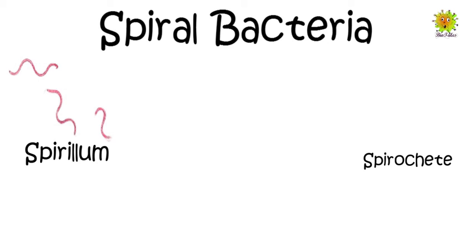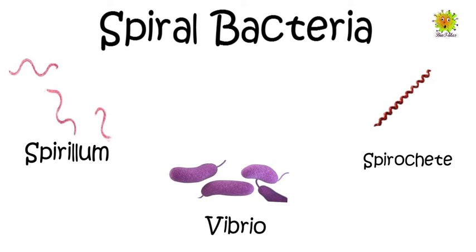Next is spiral bacteria. These are spiral-shaped bacteria. It includes spirillum, which are thick, tough spirals; spirochetes, which are thin and flexible spirals; and vibrios, which are comma-shaped rods with a small twist.